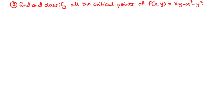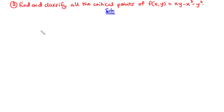Let's take our second example. We are going to find and classify all the critical points of the function f(x, y) = xy - x³ - y². Like we did in the previous example, the first thing we are going to do is find the critical points. To do that, we want to find the first-order partial derivatives of the function with respect to x and then y, and then set them to zero.